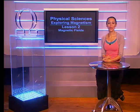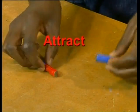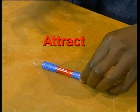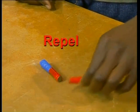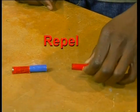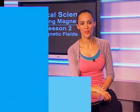We also know that magnets have an effect on each other. When opposite poles of a magnet are brought close to each other, there is a force of attraction between the magnets. But when poles of the same type are brought close together, they repel. Let's investigate these forces further.